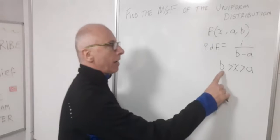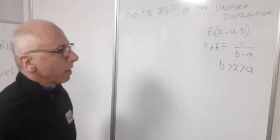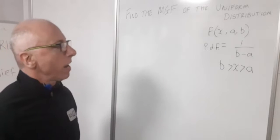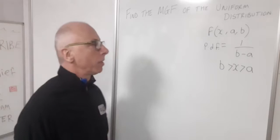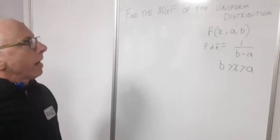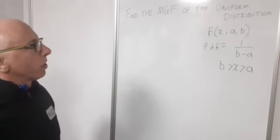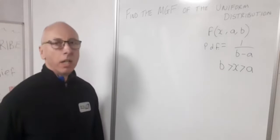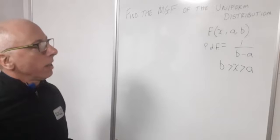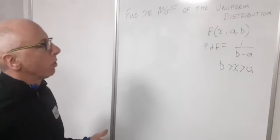Now B and A can take any value. They can be negative, positive, whatever range we want them to be. So now we need to find the moment generating function from this information. So we established that this is a continuous distribution.